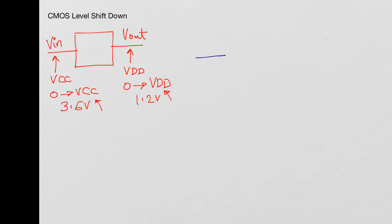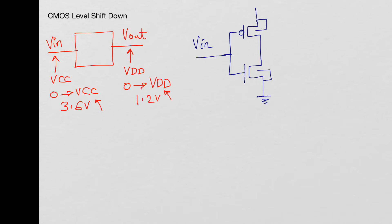We have a signal coming in at a higher voltage level — VCC level — so VIN has to be handled by high voltage devices. I have an inverter built with high voltage devices, but notice on the power supply I use VDD level here, not VCC level. So when VIN is at ground, the P-channel is on, and you have a full VSG_P equal to VDD for the P-channel.